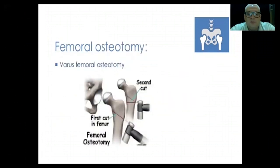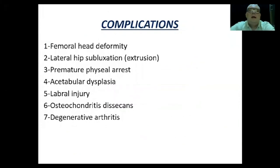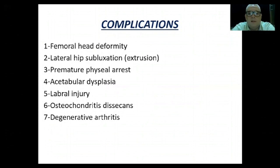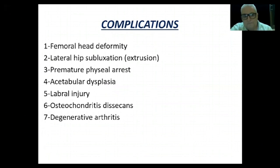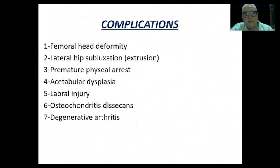The femoral osteotomy may be a varus osteotomy fixed with a plate, involving removal of a medially-based wedge. Complications affecting the femoral head include deformities such as coxa breva, coxa magna, coxa vara, and trochanteric overgrowth. Lateral hip subluxation occurs due to abduction-flexion deformities. Premature physeal arrest can cause decreased remodeling and shortening. If the head is not growing or moving, acetabular dysplasia results. Labral injuries, osteochondritis dissecans, and degenerative arthritis may also occur.